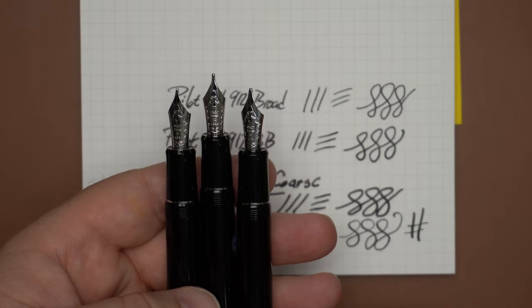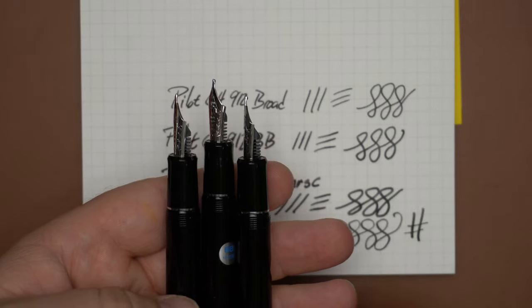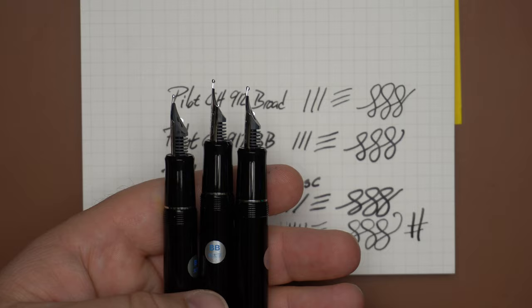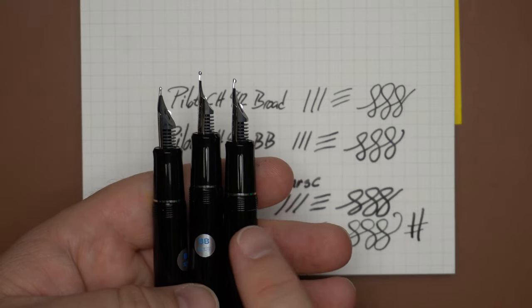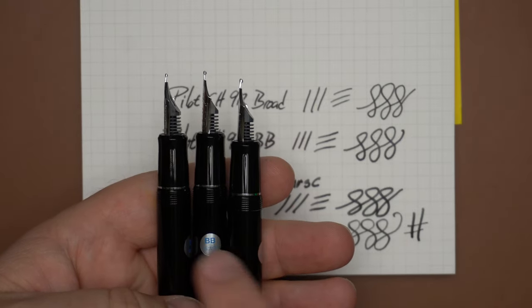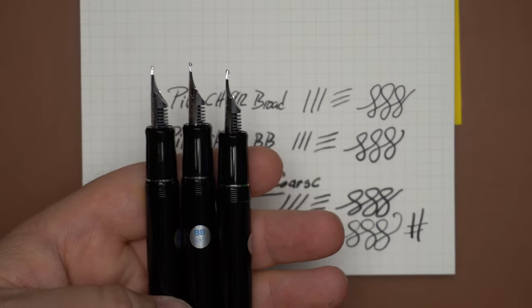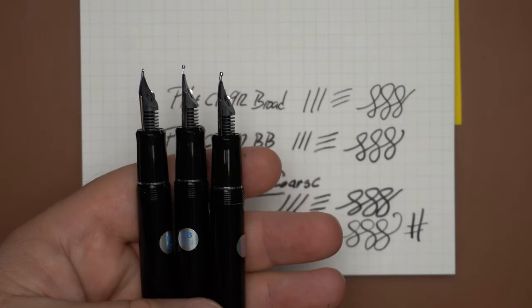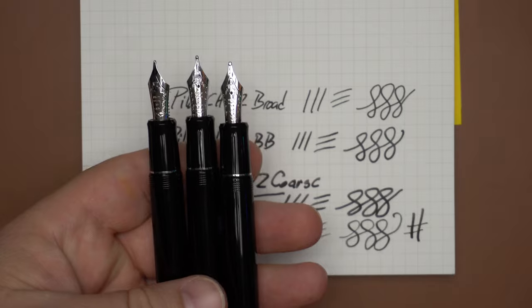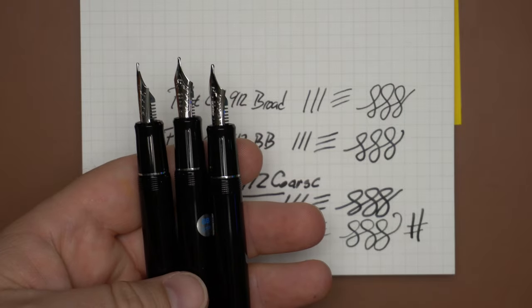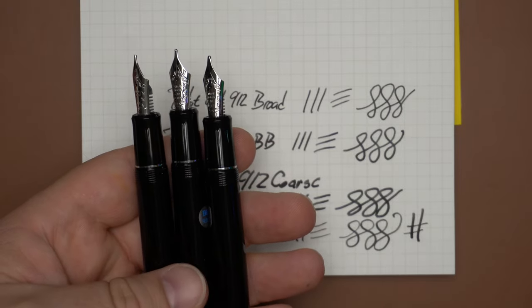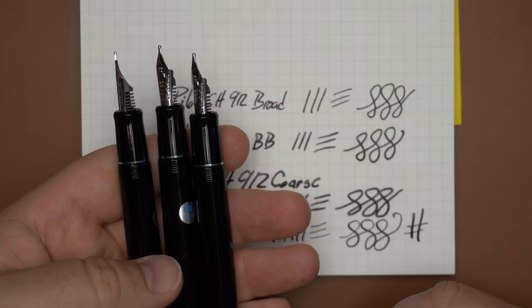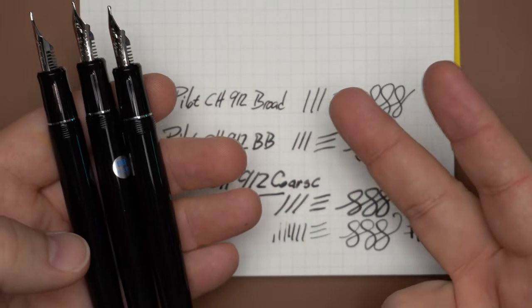So there you have it, the broad, double broad, and coarse nibs from the Pilot Custom Heritage 912. If you'd like to make an impact, you really can't go wrong with a C or a double B, or even just the regular old B for your regular broad everyday writing. These are very smooth and pleasant nibs to write with, and I hope you'll get to check them out sometime for yourself. Let me know what your favorite big nib is down there in the comments, and I'll see y'all in another video. Peace out.